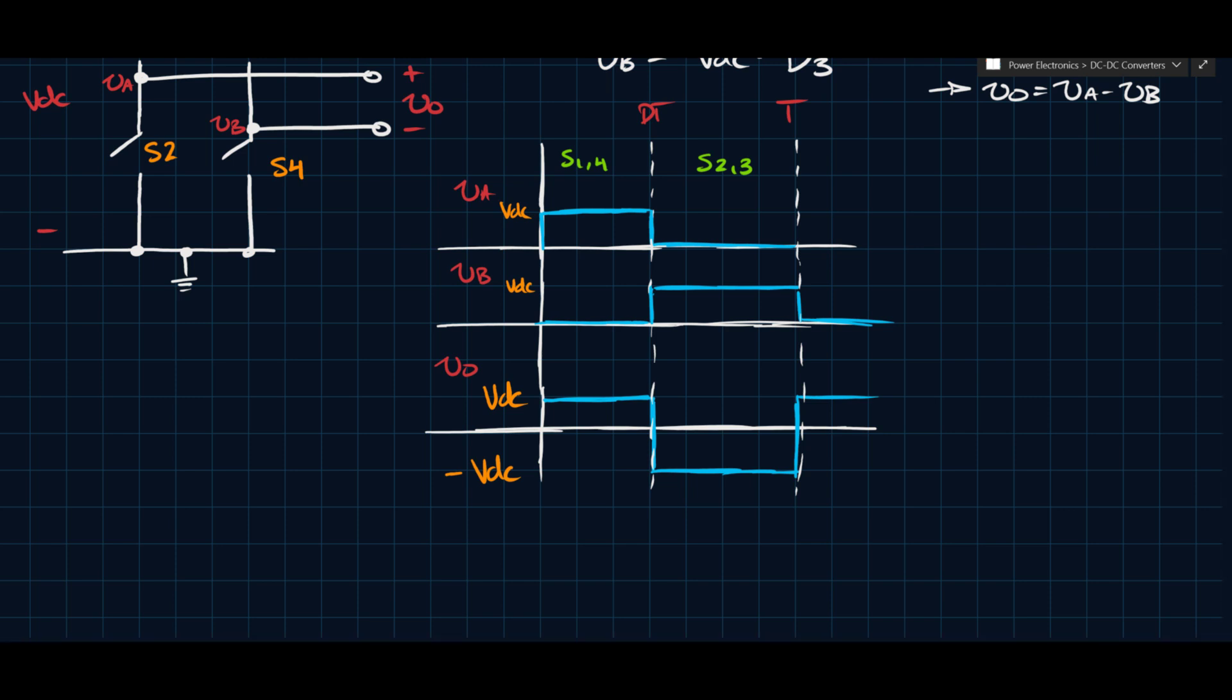So based on that, we see a sort of behavior like this. And you'll see that the average in this case is not zero. And the average is not zero because these two are not symmetric. And by symmetric, I mean the time that they're on for. So DT is less than 0.5, or D is less than 0.5 in this case.